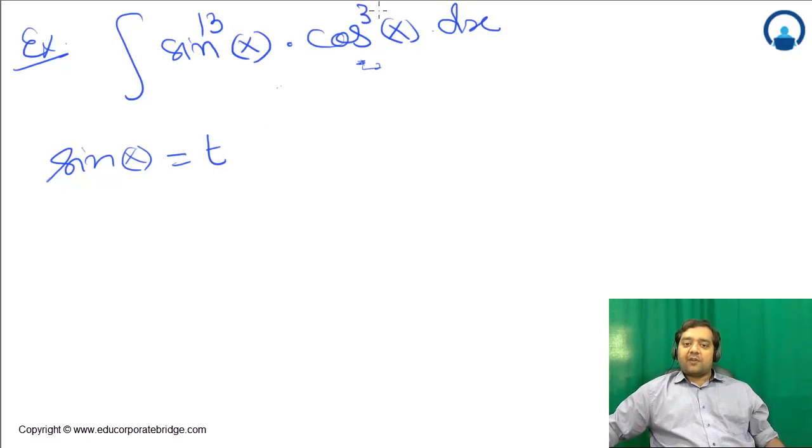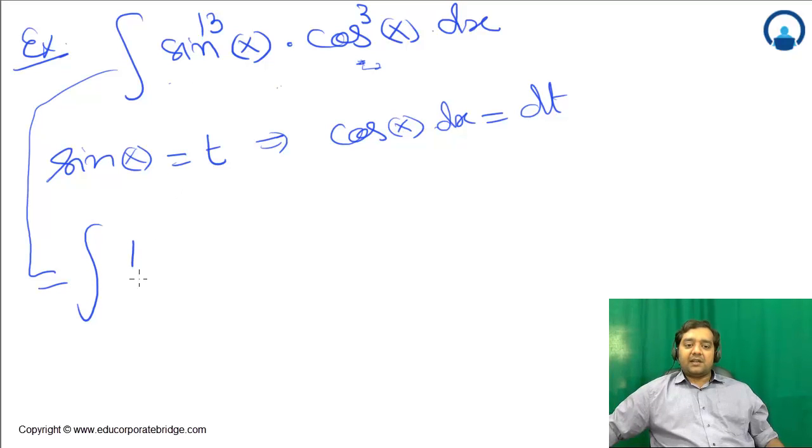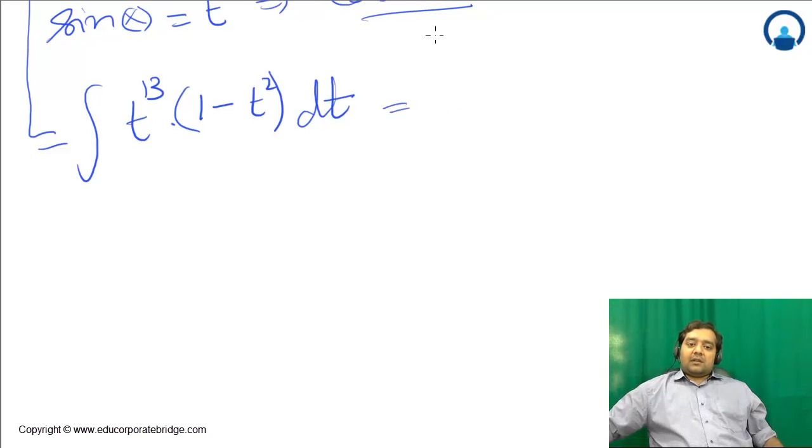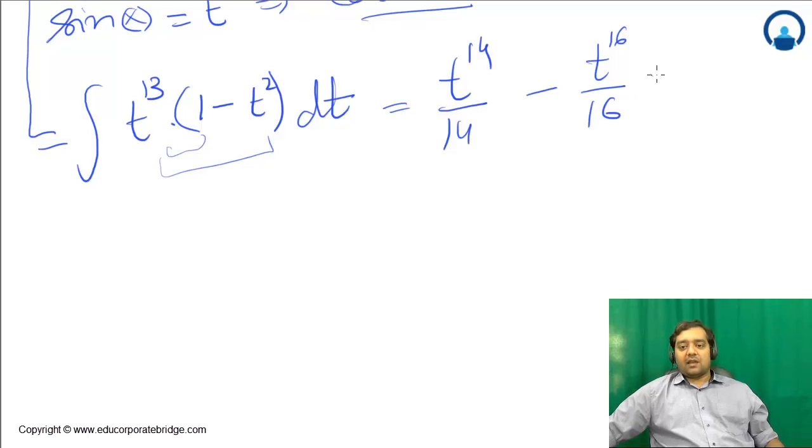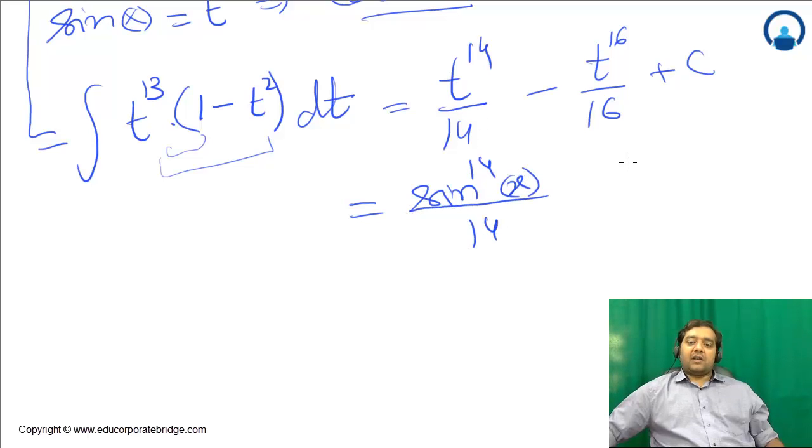If we have an option, we should choose the greater power for substitution. So put sin(x) = t, giving cos(x)dx = dt. The integral becomes (1 - t²)t¹³dt, which integrates to sin¹⁴(x)/14 - sin¹⁶(x)/16 + C.